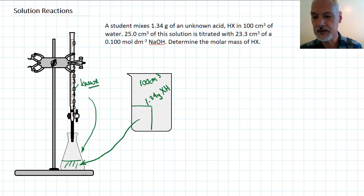Now we carefully add our known, which in this case is the sodium hydroxide solution. And we put in 23.3 cubic centimeters of this solution, which is just enough to completely react with the unknown acid down below. And we know the concentration of this solution is 0.100 moles per decimeter cubed.